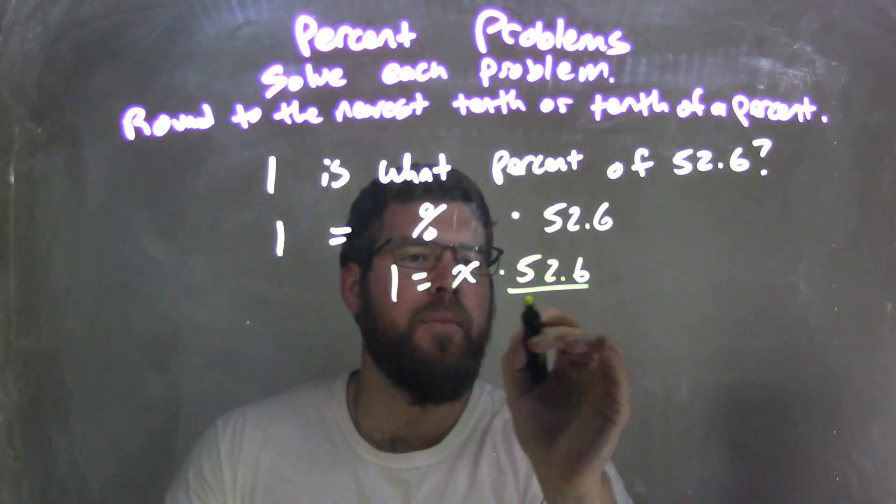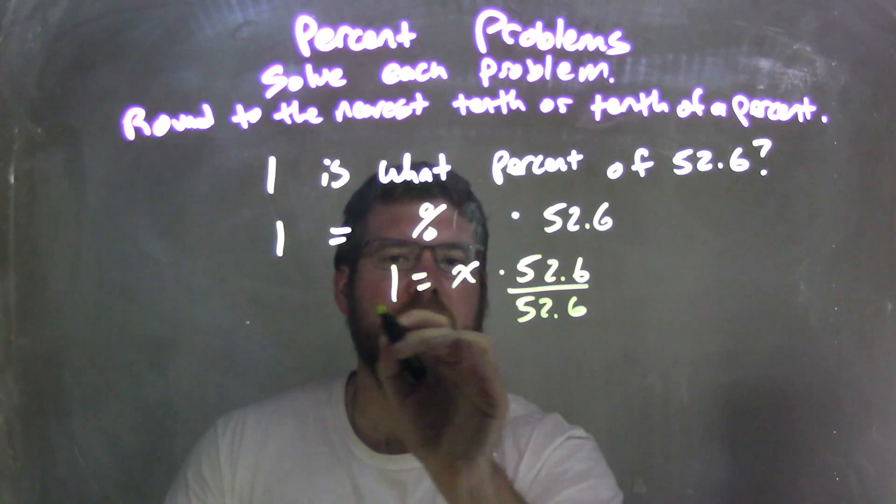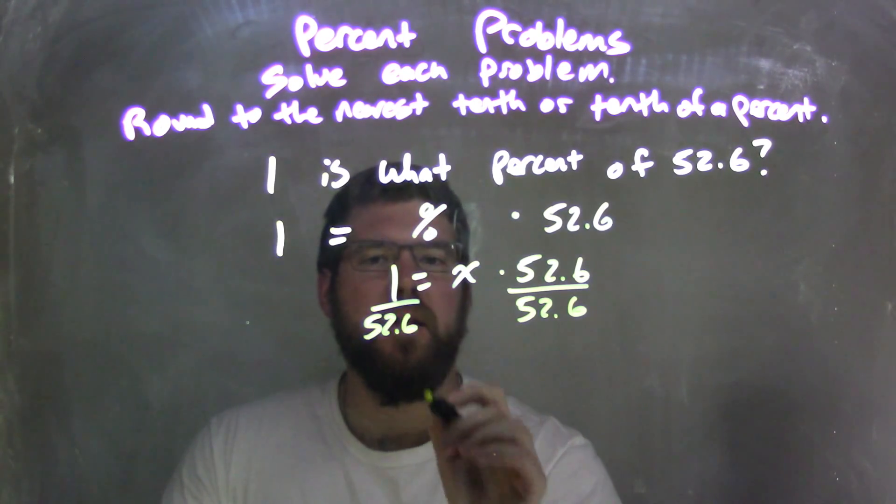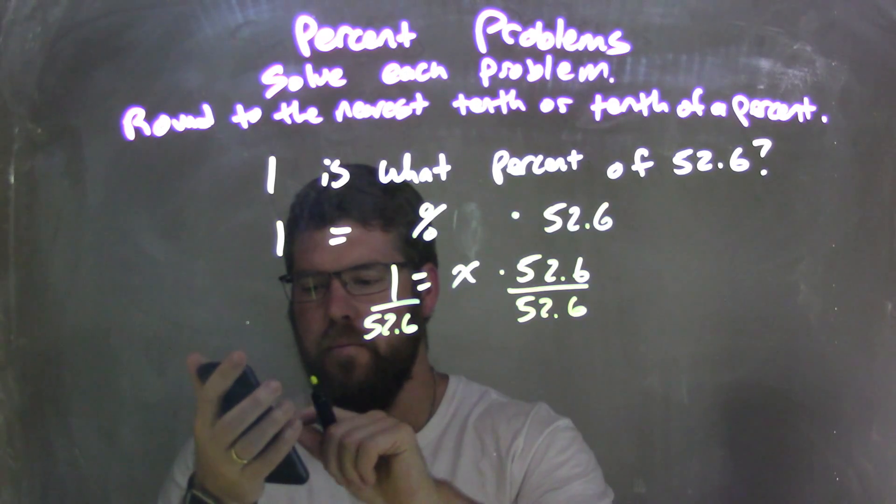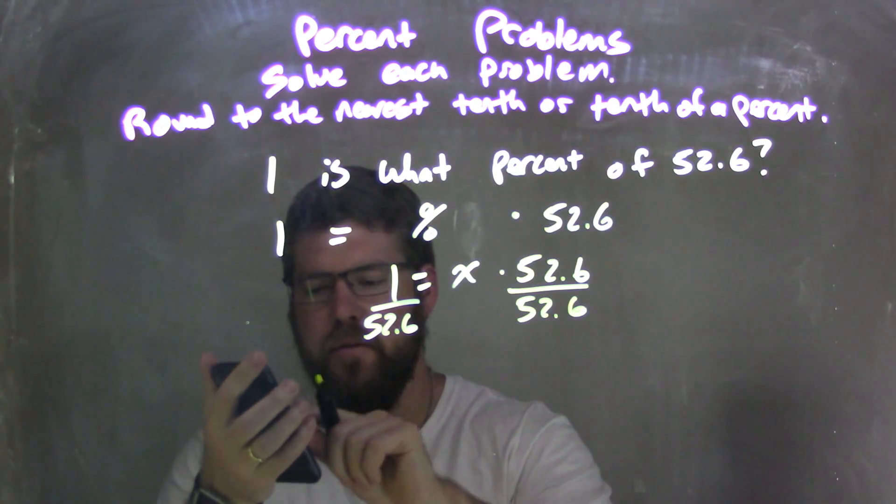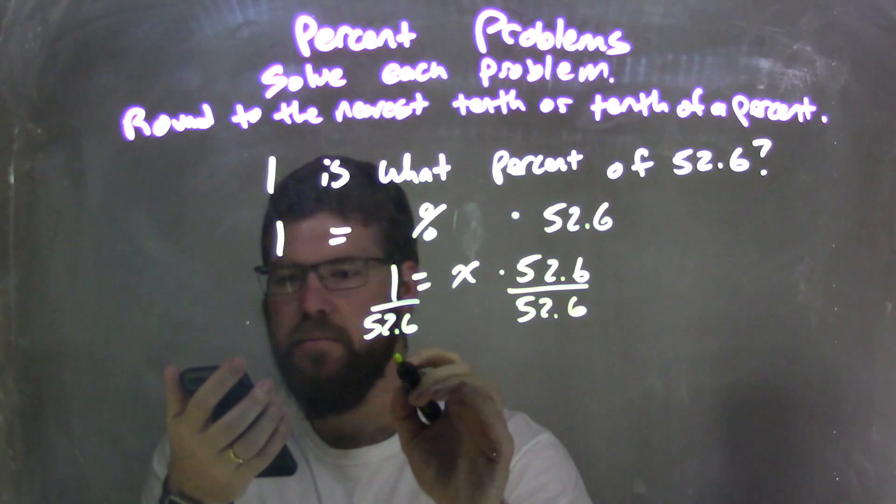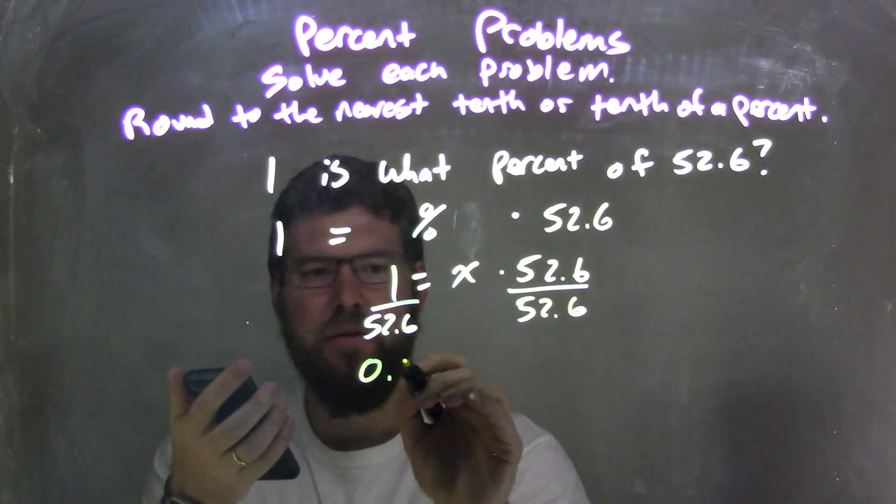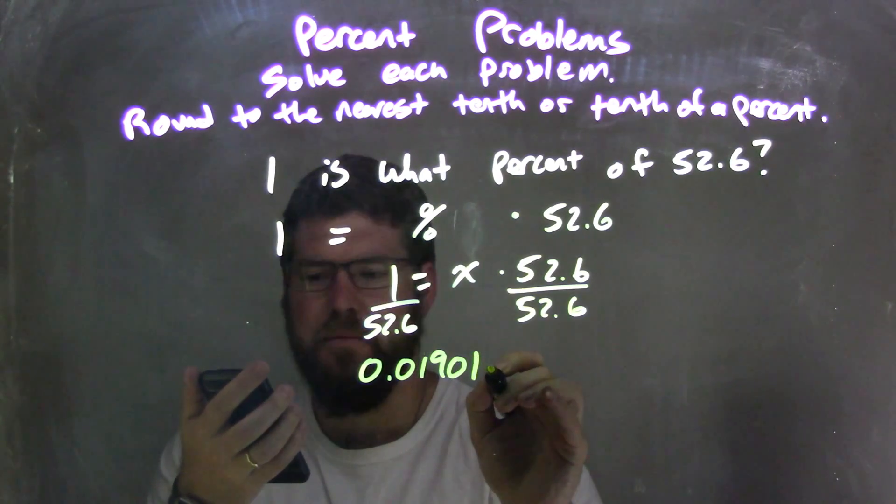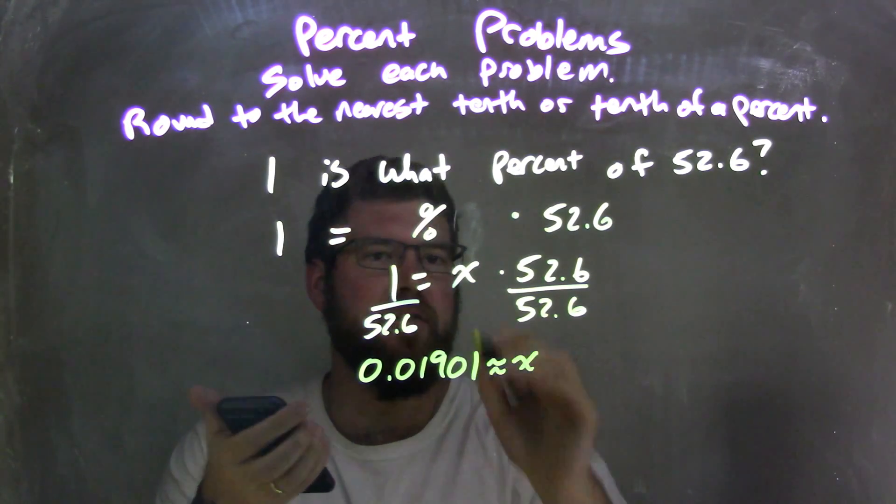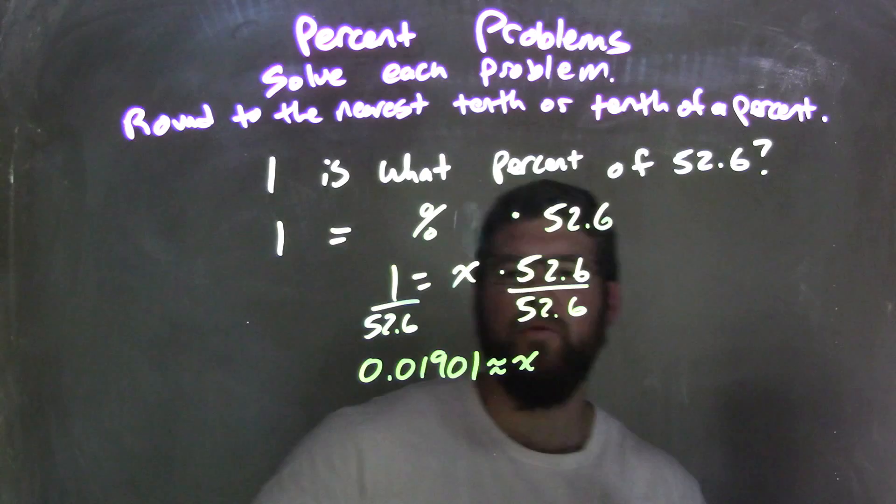To solve that, I'm going to divide by 52.6 on both sides. I'll use my calculator here: 1 divided by 52.6.